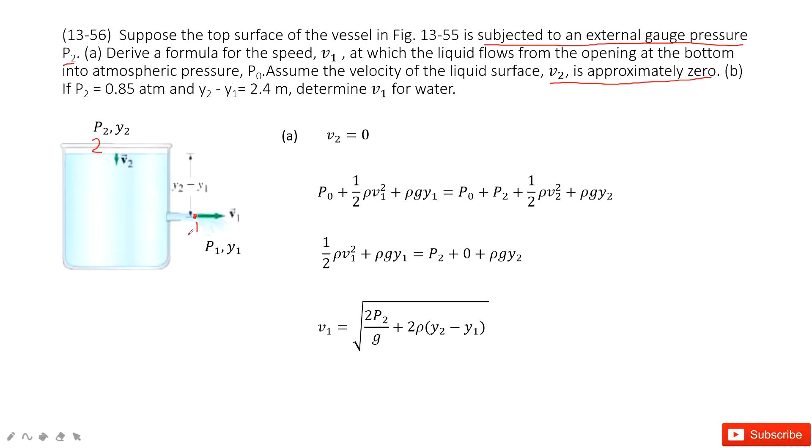We can use Bernoulli's equation. You can see the situation at position 1: the pressure is p0 because it's connected with air, plus one-half rho v1 squared plus rho g y1. And then at position 2...